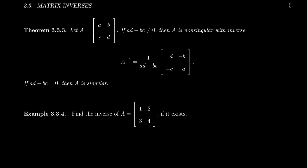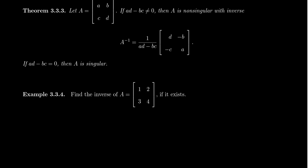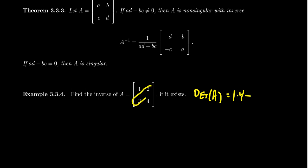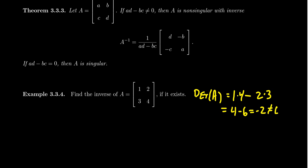We're going to use this formula to compute the inverse of a specific two-by-two matrix A. The first thing to do is check the determinant. Take the product of the main diagonal entries, one and four, giving one times four, then subtract the product of the off-diagonal entries, two and three: that's two times three equals six. So the determinant is four minus six, which is negative two — not zero. This tells us the matrix is non-singular and therefore invertible.